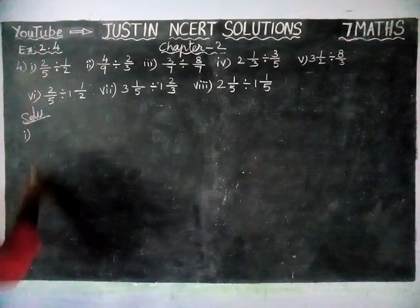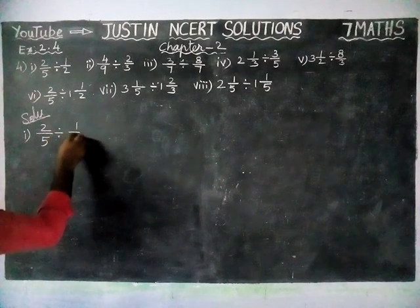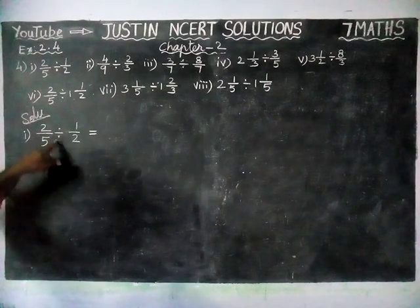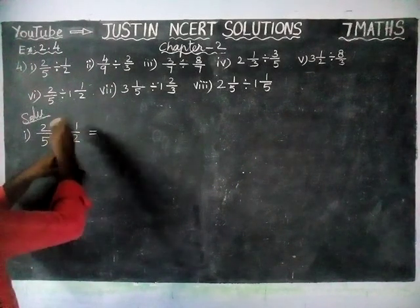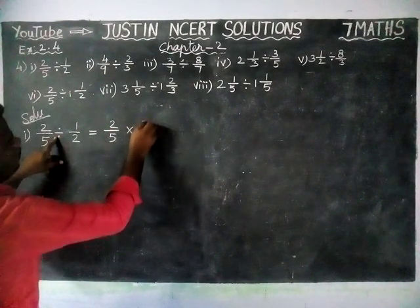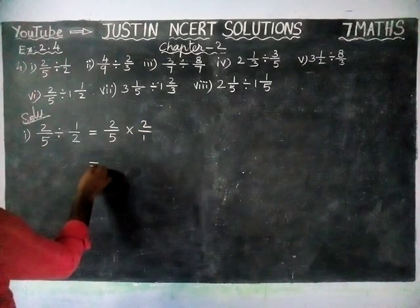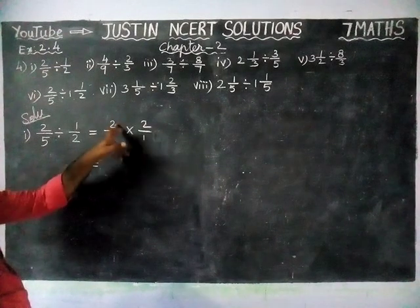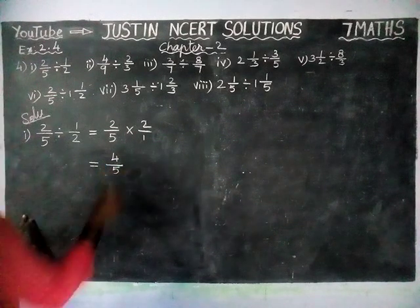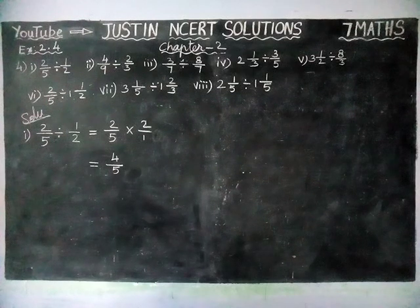Solution, 1st question: 2/5 divide 1/2. Here, both sides are fractions. We have to find the reciprocal for the right-hand side. So, 2/5 multiply 2/1 — the reciprocal is 2/1. Multiplying numerator by numerator: 4 divided by 5. So, the answer for the first question is equal to 4/5.